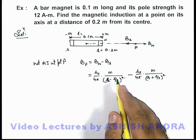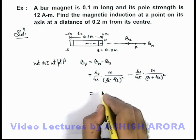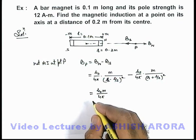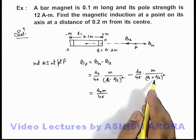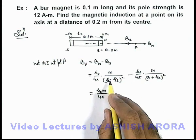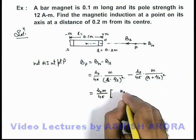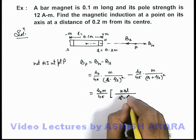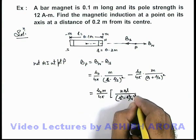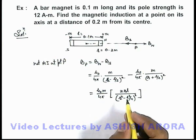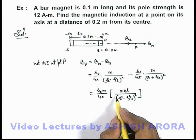If we simplify the result, finally we are getting here μ₀m/4π we can take common. If we square these terms and take LCM, in numerator we will be getting this will be r·l plus r·l, it will be 2r·l divided by r² minus l²/4 whole square. In this situation, the final result if we simplify.